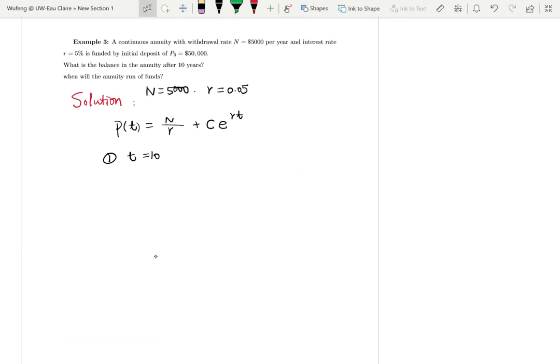First step we always need to do is solve C based on the initial condition. The initial condition P0 is 50,000.